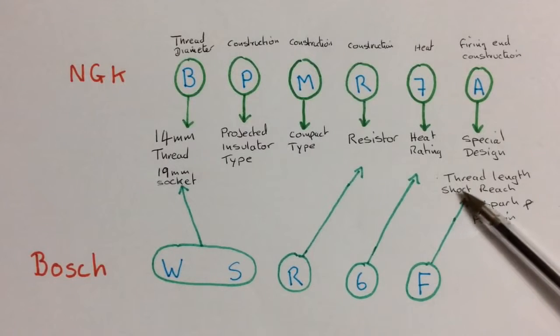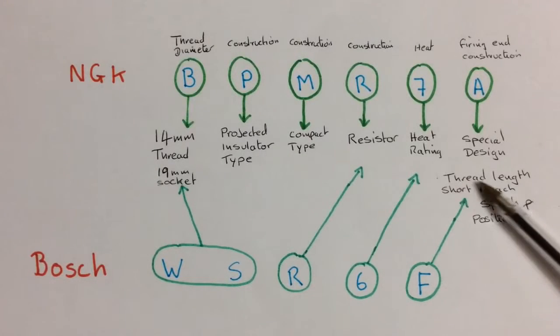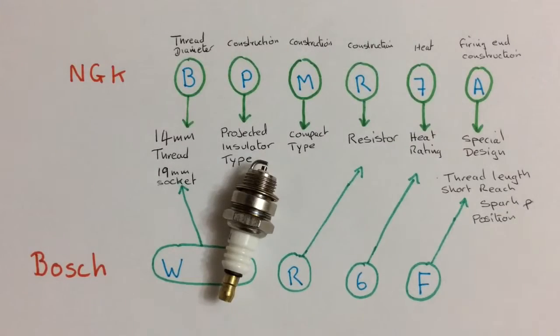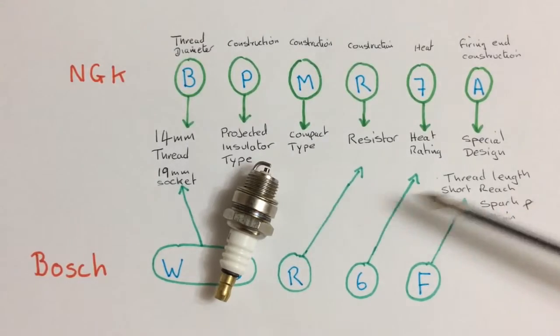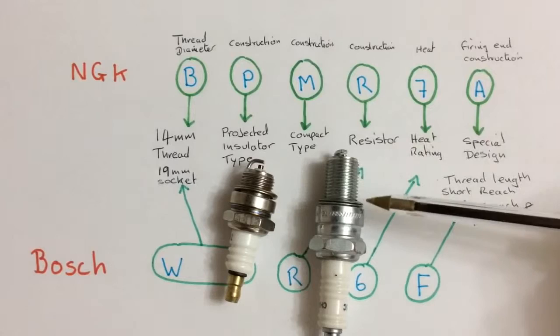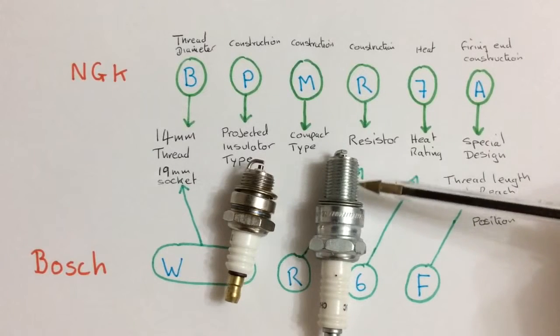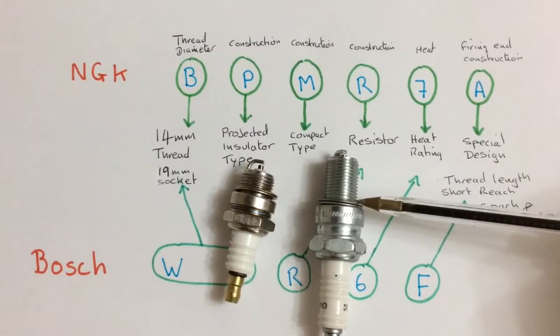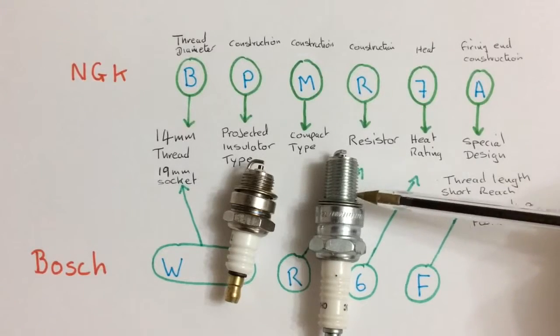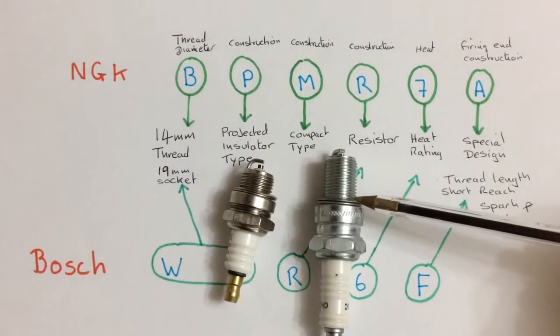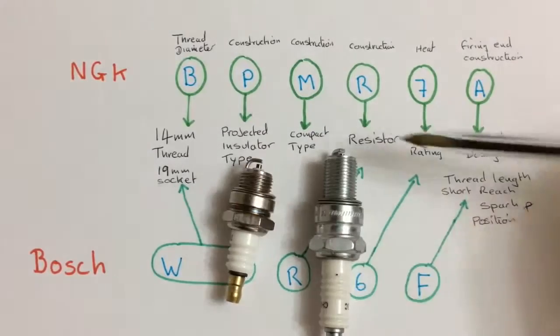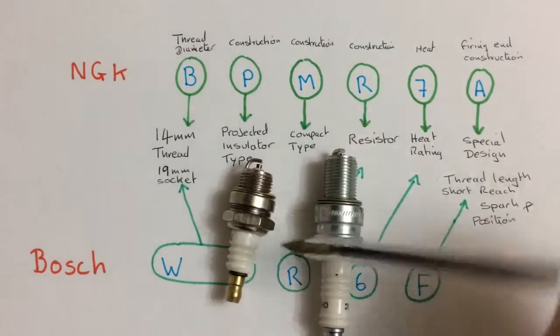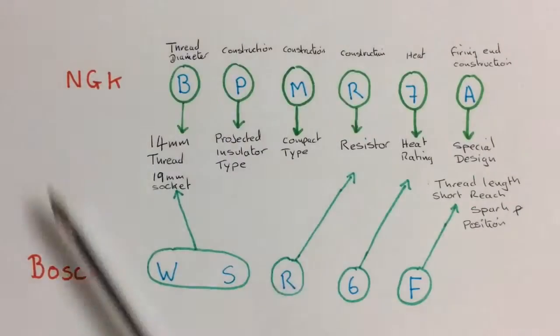F represents it being a short-reach spark plug. So it represents the thread length and the position of the spark plug. Just to put that into perspective. It basically means thread length. So the length from there to there. And the fact that it's a short-reach plug. When we compare it to this plug, which is a longer thread length. And that's a longer-reach plug. It reaches longer into the cylinder. Reaches further in. So as a result of that, the sparking position, if you like, will be in different positions in the cylinder. The sparking position for this will be further down. And this will be further up, obviously. So that's basically what the codes mean.